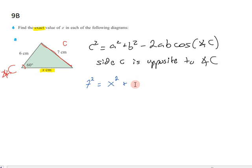And b will be our known side, 6. It doesn't matter which way we go. And then we'll have take 2 times x times 6 times the cosine of angle c, 60 degrees.